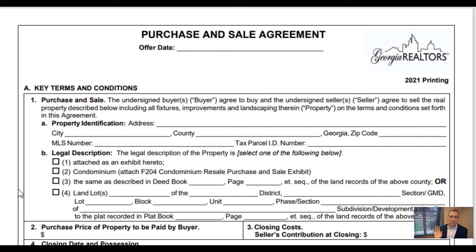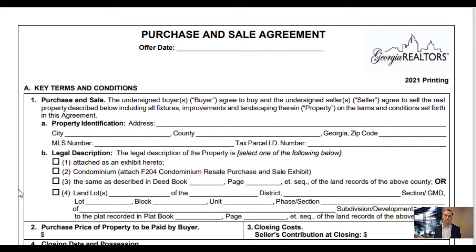It will look and work the exact same for new construction as well, and would work the same for lot and land or any of the other contracts that GAR has. We're specifically going to look at the key terms and conditions section one, and it is the property identification section A and legal description section B. Section A is pretty easy — property identification. We have the address, the city, the county, zip code, the MLS number if applicable, and the tax parcel ID. That leads me to my first point: the two ways that people are getting these tax ID numbers — either through Relist, which is an option through FMLS, or going directly to the tax assessor website.